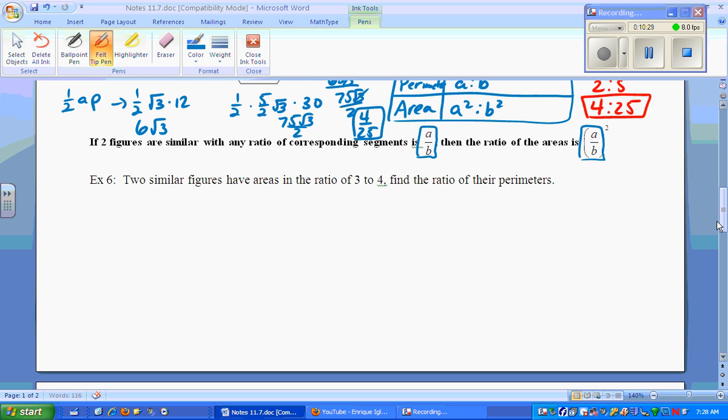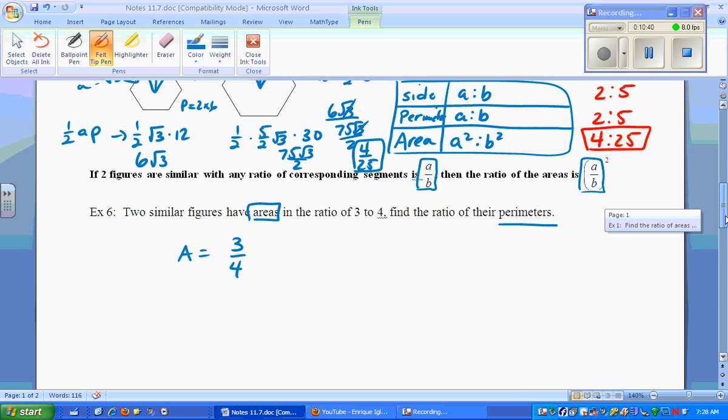Let's finish up here. Number 6, two similar figures have a ratio of areas. So the ratio of areas is 3 to 4. Find the ratio of perimeters. Well, basically, we're going backwards now. So we're given this, and we want to go back to sides. So if these numbers are supposed to be squared, how do we unsquare them? Unsquare square, square root. So what do we do? We take the square root and the square root. End up with the square root of 3 because they can't break up. But the square root of 4 is 2. So this is the ratio of sides and ratio of perimeters.